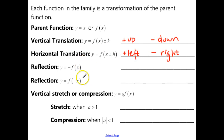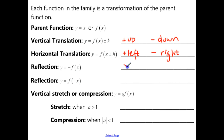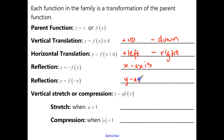Now we have two different types of reflections. If the negative is outside of the function, this is going to be a reflection over the x-axis. If you have that negative inside the function with that x, this is going to be a reflection over the y-axis.